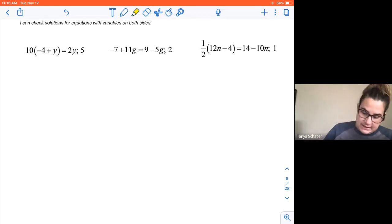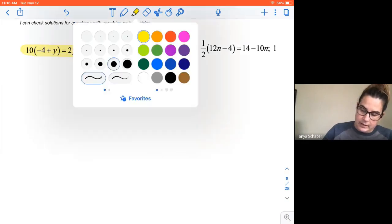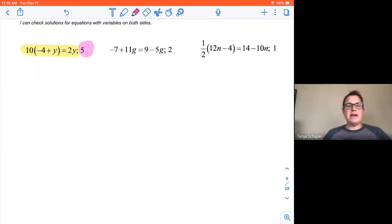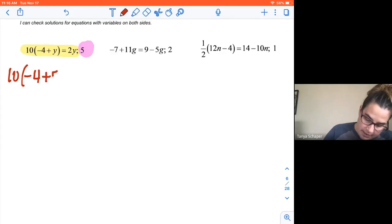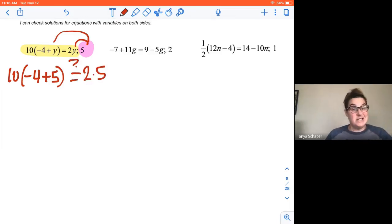What we're saying is this is the equation right here. This is the answer somebody got. So we want to know, does five make this true? So is 10 times the quantity negative four plus five? I'm putting that five in for y and I'm actually putting it in for both y's. Is that the same as two times five?